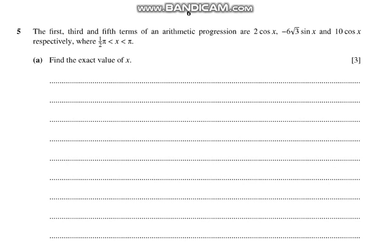Question number 5 says that the first, third, and fifth terms of an arithmetic progression are 2cos(x), -6√3sin(x), and 10cos(x) respectively, where x is between 90 and 180 degrees. Find the exact value of x.